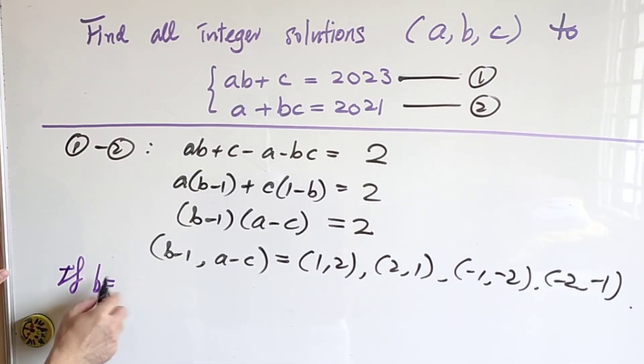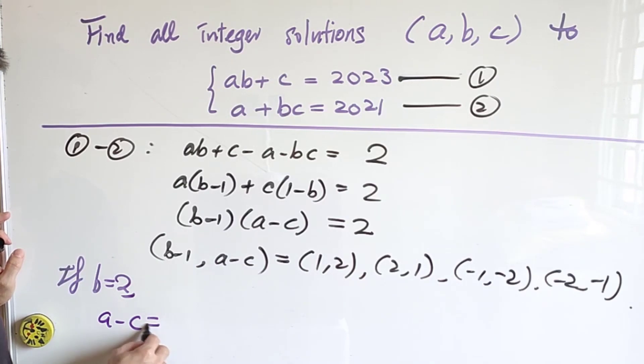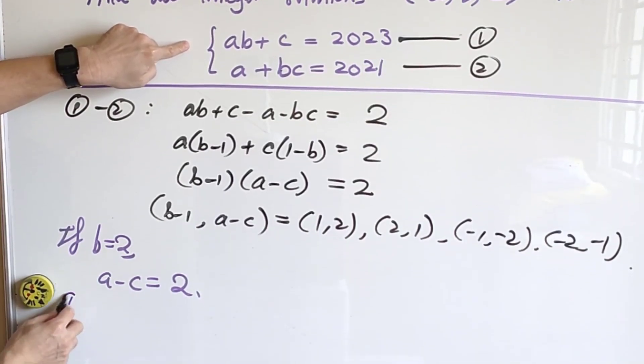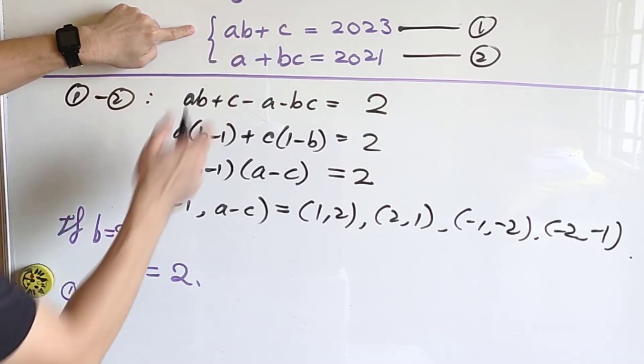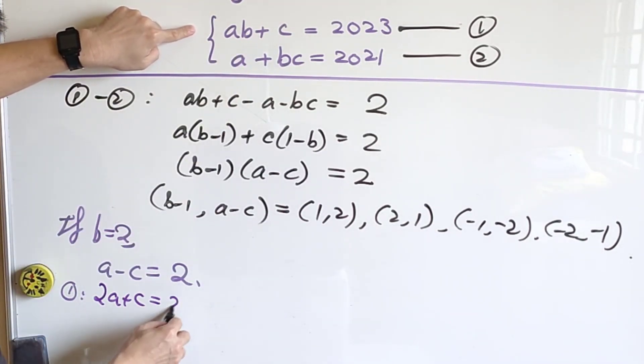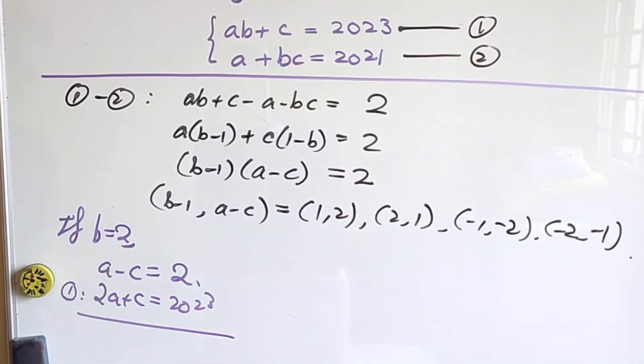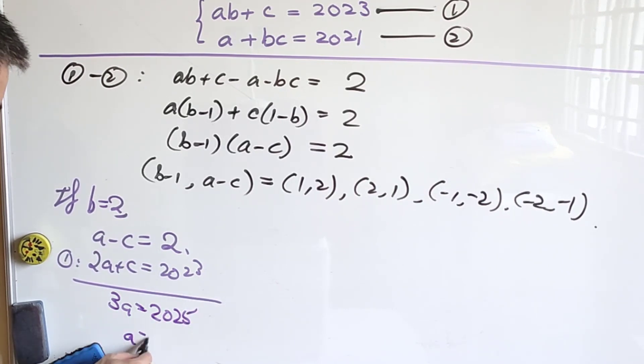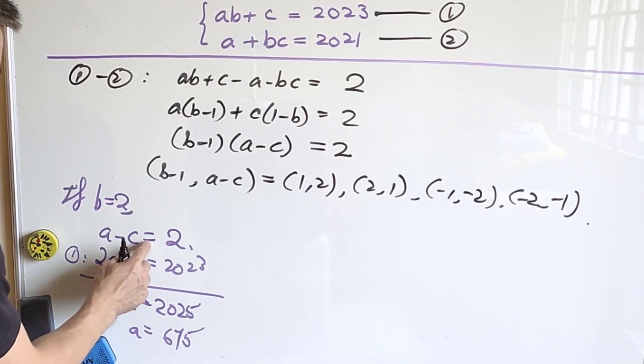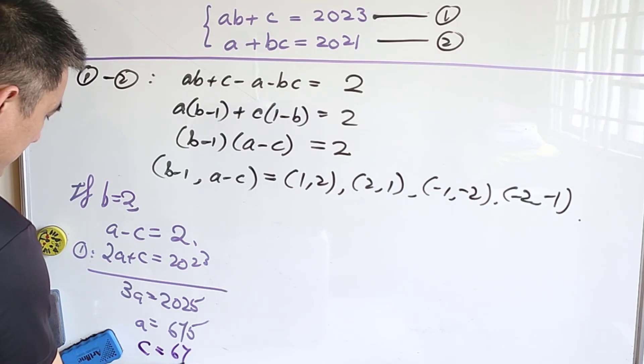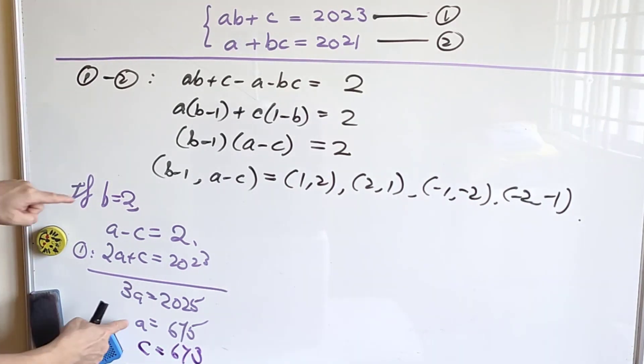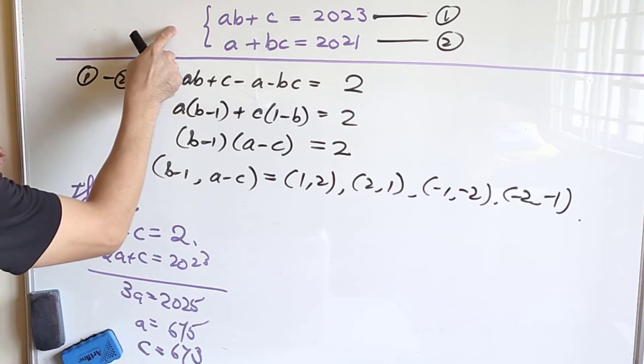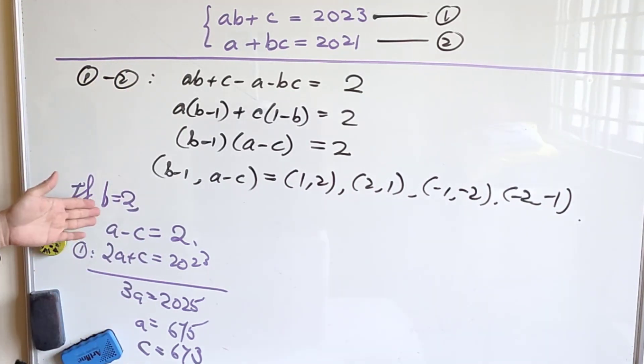If B is equal to 2, then we know that A minus C is equal to 2. And from equation 1, B equals to 2, so 2A plus C is equal to 2023. When we add up together, 3A is equal to 2025. Therefore, A is equal to 675 and C equals to 673. We can check that such A, B, C will satisfy this simultaneous equation. This is a case for B equals to 2.